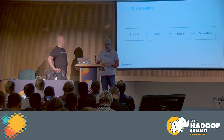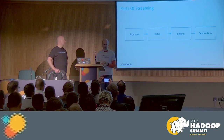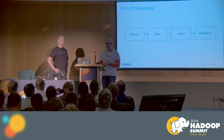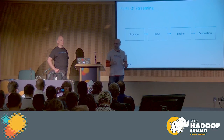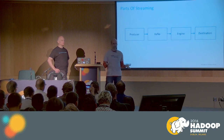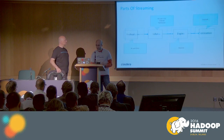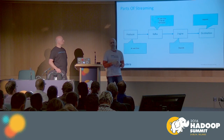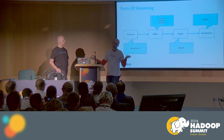Before we talk about engines, let's talk about the whole pipeline. As of right now, this is probably the most common pipeline: a producer that sends records to Kafka, then an engine after Kafka, and then some kind of destination. One important thing to note: everyone at this conference will tell you they are exactly-once. That's important, but it doesn't matter if the entire pipeline isn't exactly-once.